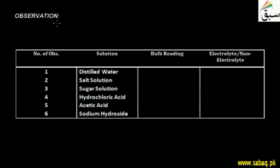We will note observations. Here we will build a table with the number of observations and the solutions we have made: distilled water, salt, sugar, hydrochloric acid, acetic acid, and sodium hydroxide. For distilled water, the bulb reading showed no light. So we write: no light.